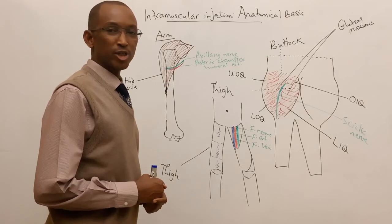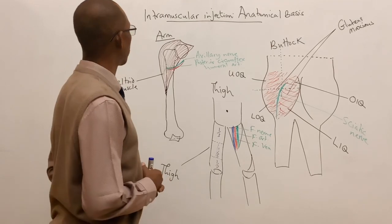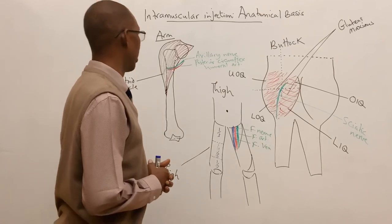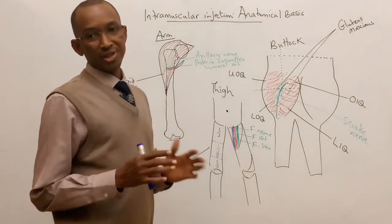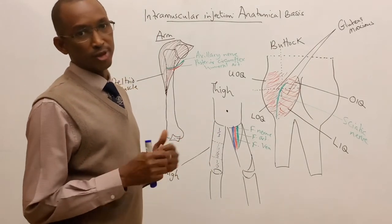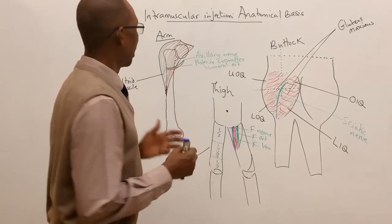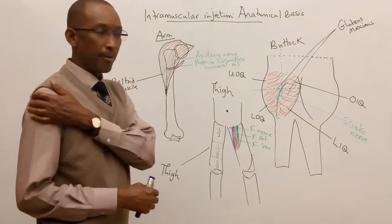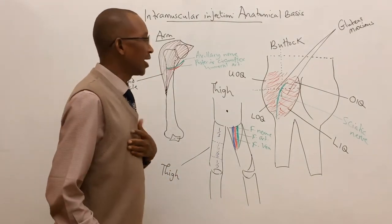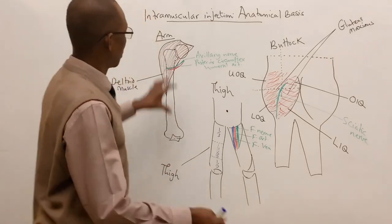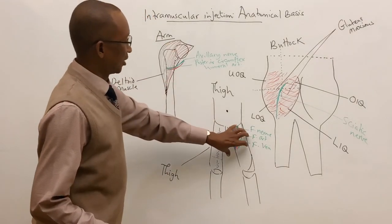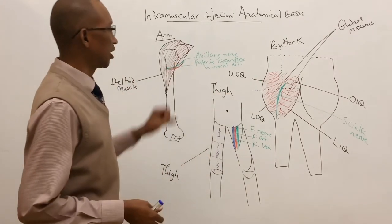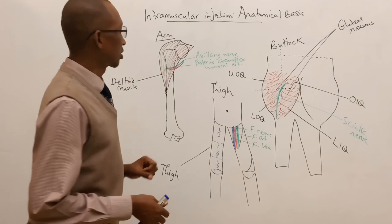Today's discussion is about intramuscular injection and the anatomical basis for IM injection. There are three major places where a doctor or paramedic can give an intramuscular injection. The three major sites include the arm, the thigh, and the buttocks, as shown in these diagrams.